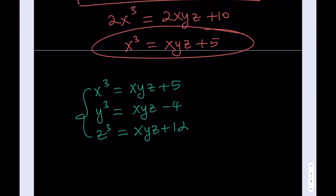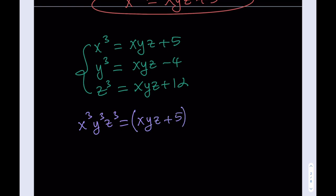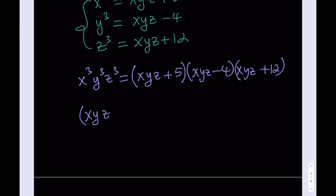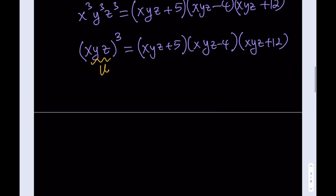What I'd like to do is take these three equations and multiply them all together. The reason will be obvious when I write xyz as u — substitution, which I emphasize all the time in these videos. So I'm going to call u equal to xyz, and we're going to get something nice. This gives us u plus 5, times u minus 4, times u plus 12.